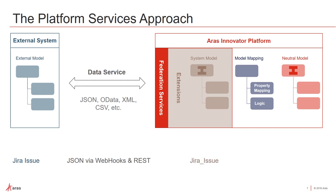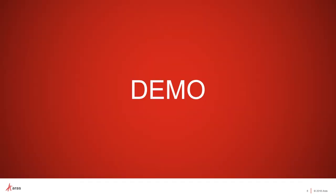Our system model is going to reflect the issue object in the JIRA system. Our neutral model is the ARIS PR — our problem report item type. This is largely out of the box; the form looks a little different, but the data model is largely the same. So now we'll go ahead and jump into our demo.